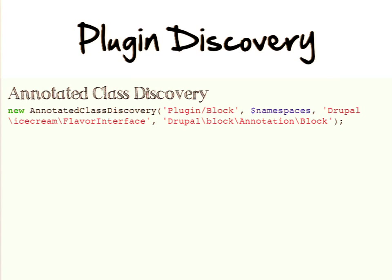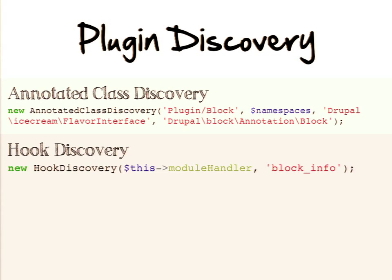Annotated class discovery is by far the most common, and also the one I would recommend. Hook discovery is essentially the equivalent of info hooks in Drupal 7 — you define the name of a hook, Drupal does a module invoke all, calls all functions that match the hook name, and aggregates the returned information. This is provided primarily as a backwards compatibility layer to allow systems to be converted to annotated class discovery over time, so you didn't have to convert every single implementation in one giant patch.